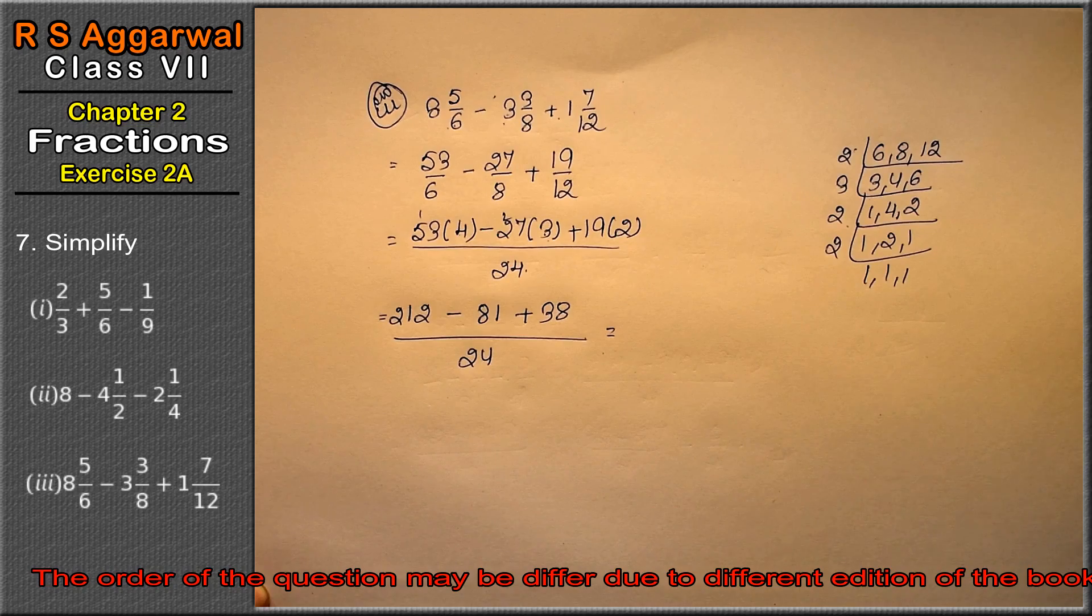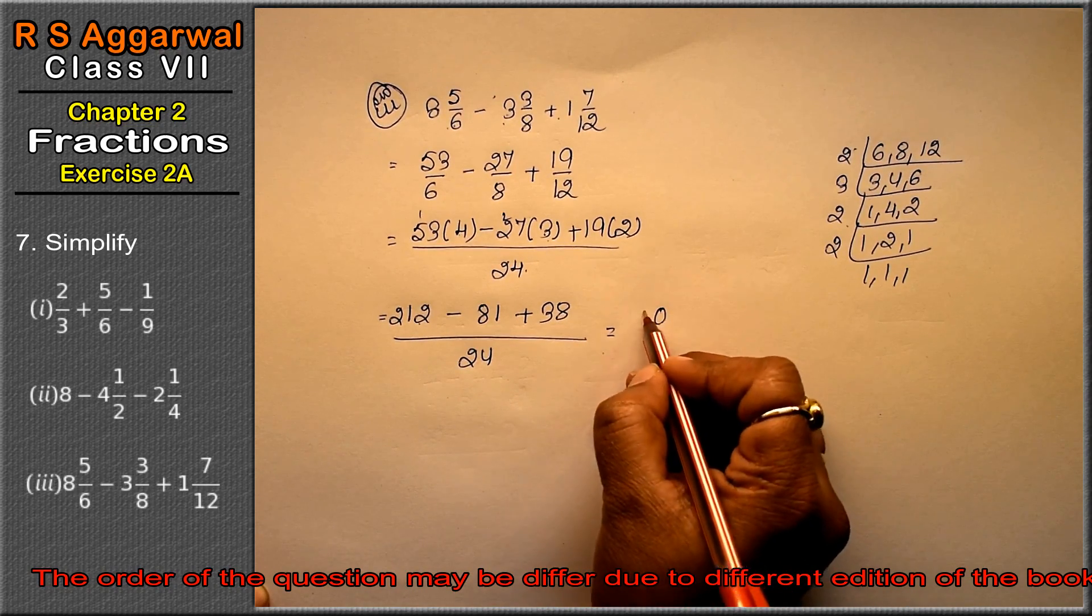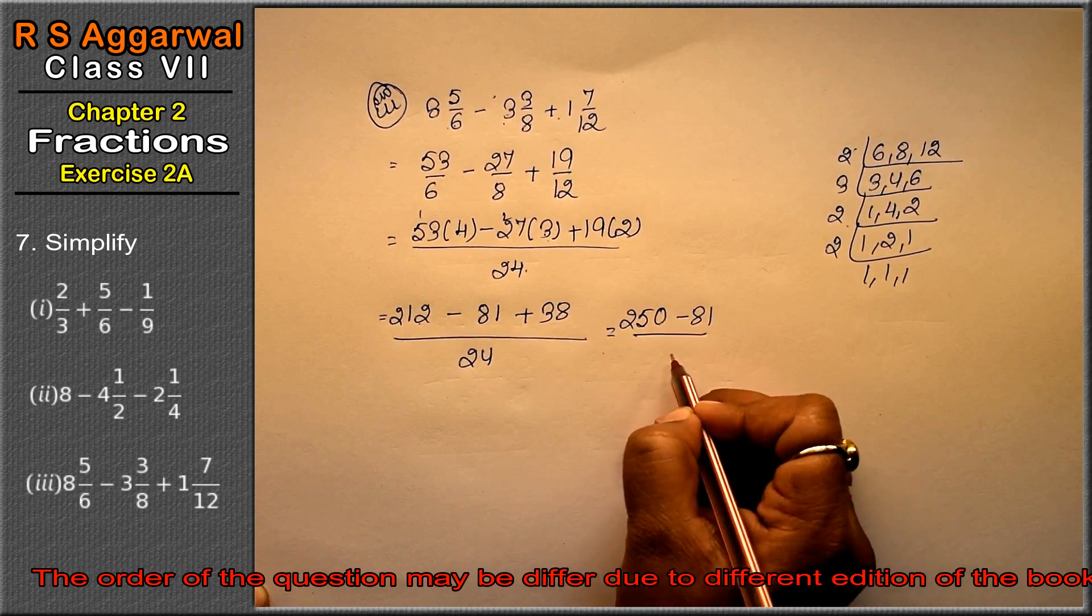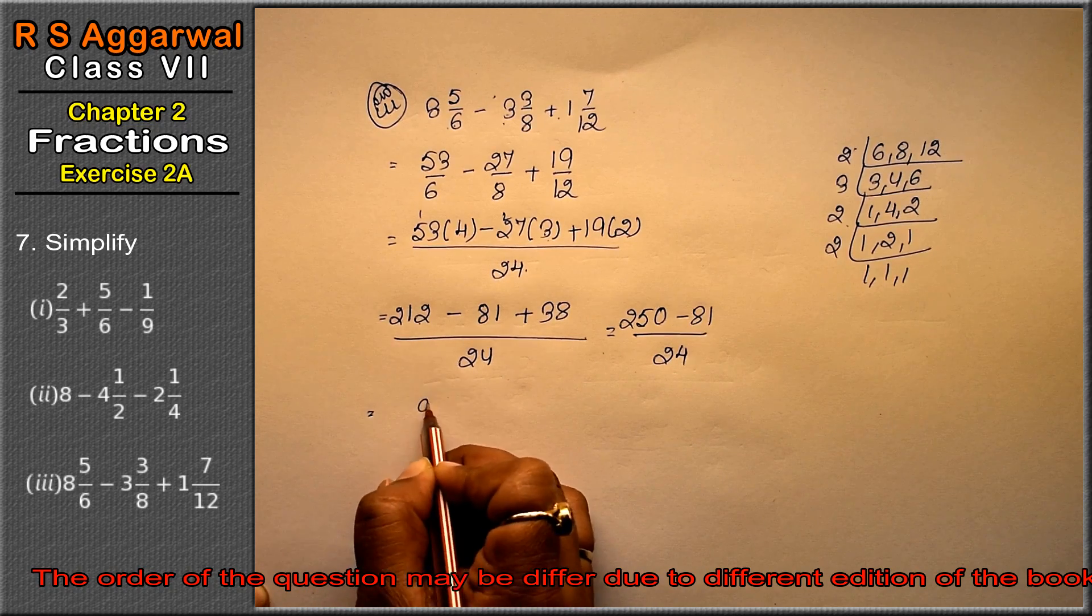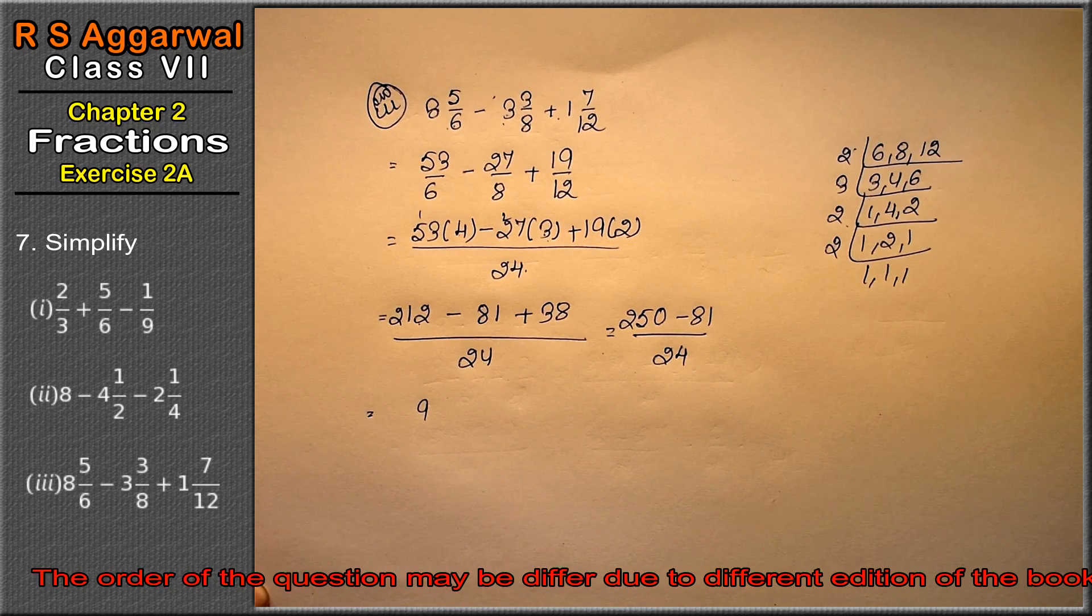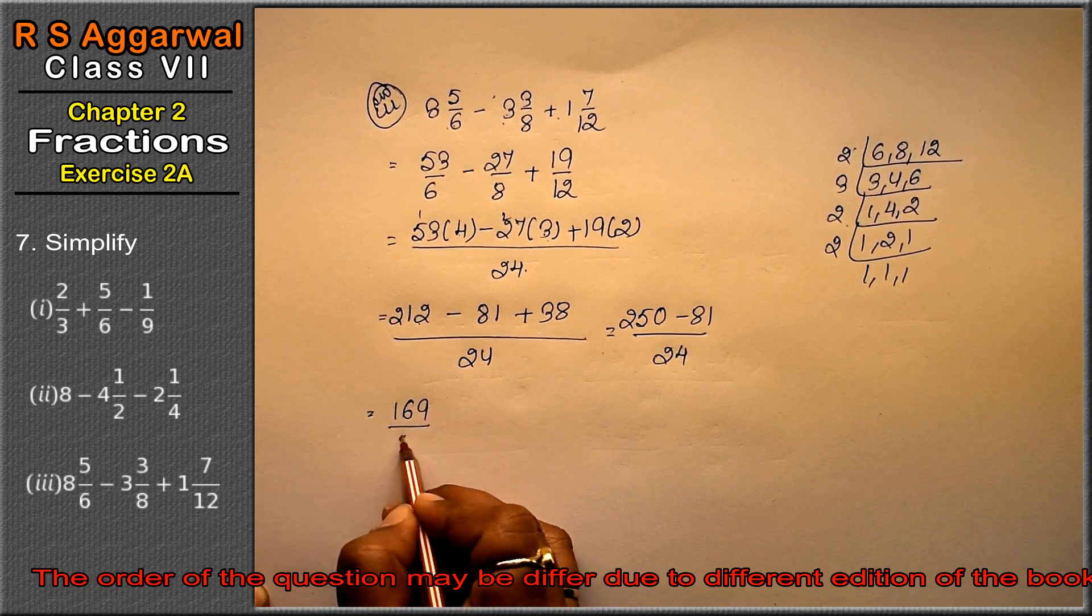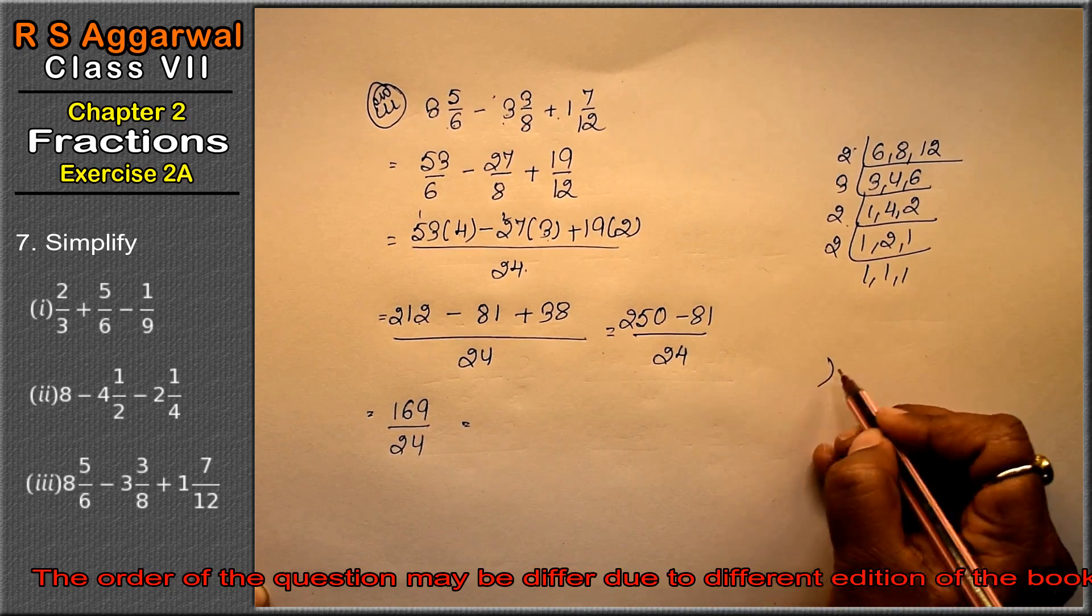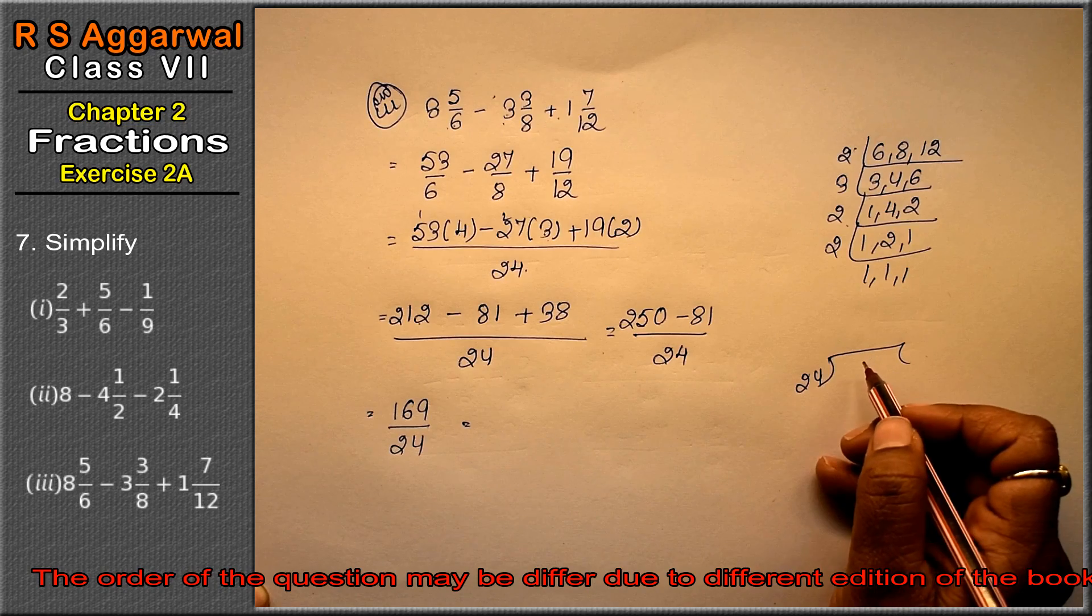Add wale ek sat add kar lehete hain, 212 plus 38 is 250, minus 81 upon 24. So kitna a gaya, 250 minus 81 is 169 upon 24. Ab ap chahein, toh is a mixed fraction me kar leje, kyunki upar wali digit bhaadi hai.